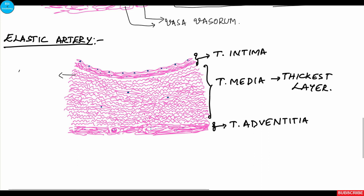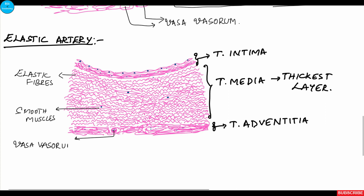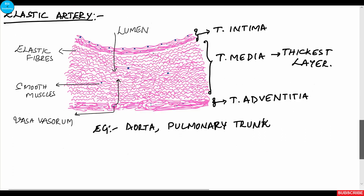The tunica media is the thickest layer in the elastic artery, containing numerous elastic fibers and few smooth muscles. The vasa vasorum in the tunica adventitia supplies the adventitia and outer layers of the tunica media, while the inner layers of the tunica media and tunica intima are supplied by blood within the lumen. Examples of elastic arteries include the aorta and pulmonary trunk.